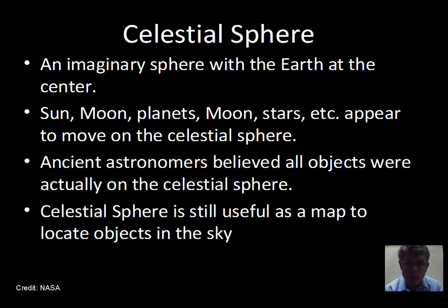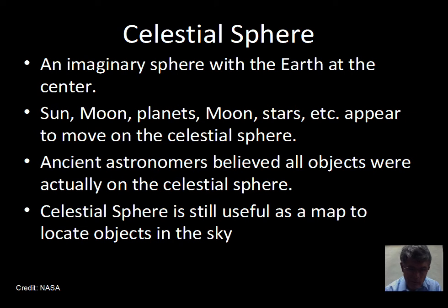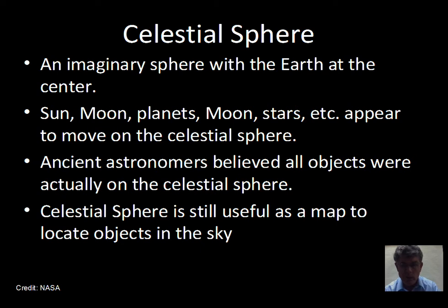From our point of view, we see the Sun, the Moon, the planets, the stars, comets, etc. They appear to move around on this celestial sphere, around on the sky — the sky being our celestial sphere. Thousands of years ago, astronomers thought that these objects were on the celestial sphere. Later in the course, we'll talk about how that was corrected.